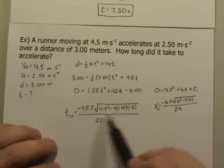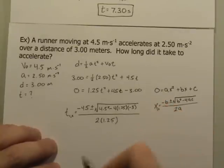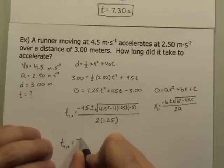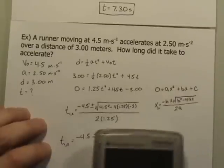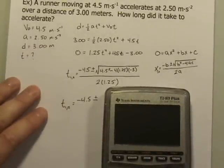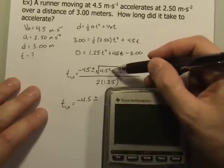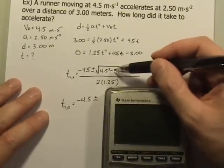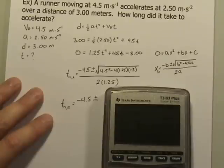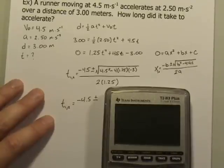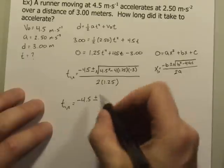Taking care of the expression under the square root and the denominator: under the radical I have 4.5 squared minus 4 times 1.25 times negative 3. The two negatives make it positive, so we're adding. Taking the square root of that gives 5.937. I'm going to keep everything for now before applying significant figures.